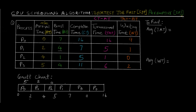There's another way to calculate these without the formulas — directly from the Gantt chart. Turnaround time is the total time the process spent in the queue: P0 arrived at 0 and finished at 16, so turnaround = 16. P1 arrived at 2 and finished at 7, so turnaround = 5. For waiting time, P0 arrived at 0 and first got CPU time at 0, then paused at time 2 and resumed at 11, so waiting time = 11−2 = 9. The same logic applies for P1, P2, and P3.